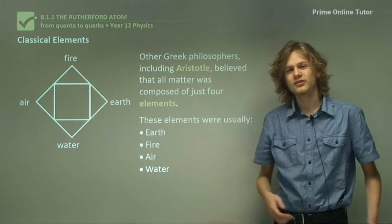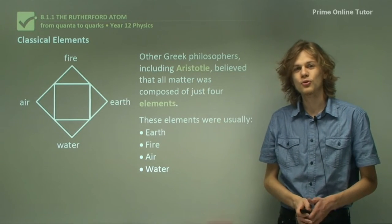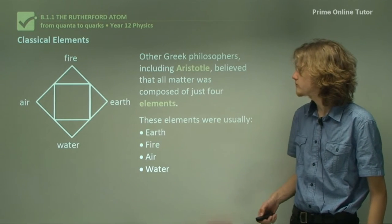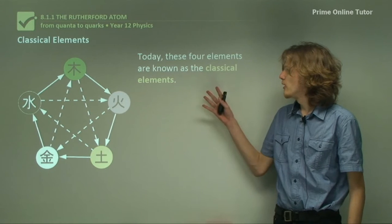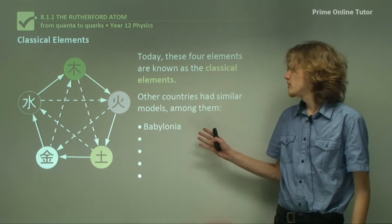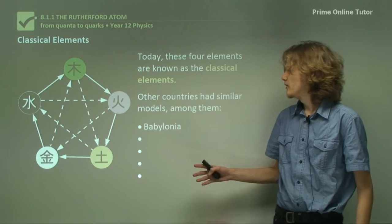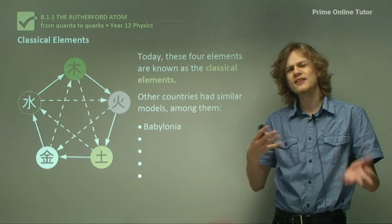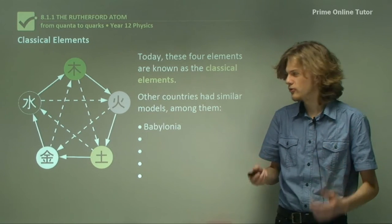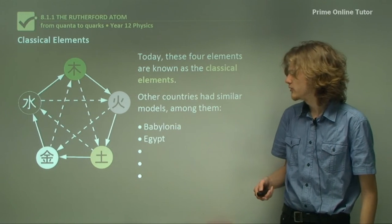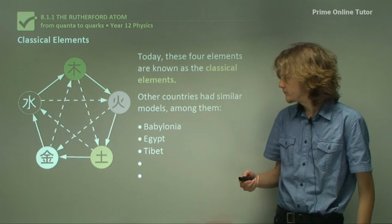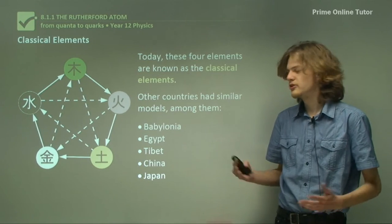And in fact it wasn't just the ancient Greek philosophers who had this view of the different elements that matter was made out of. So today the four elements are known as the classical elements, but of course other countries and other cultures had a number of different variations on this. Some of the different cultures that had a set of elements were the Babylonians, the Egyptians, the culture of Tibet, and of course it was also known in China and Japan.